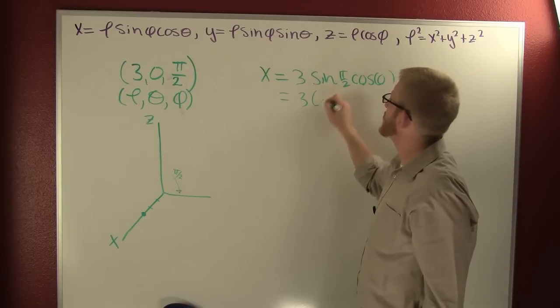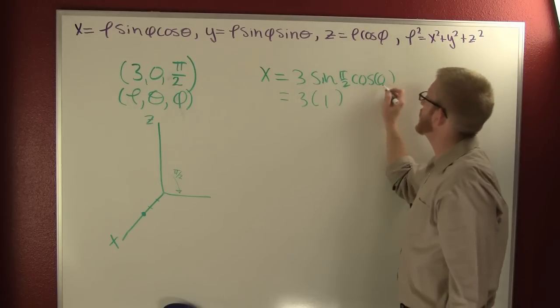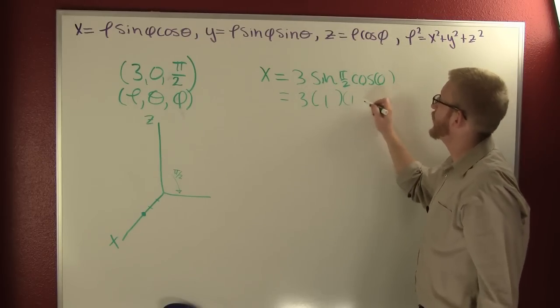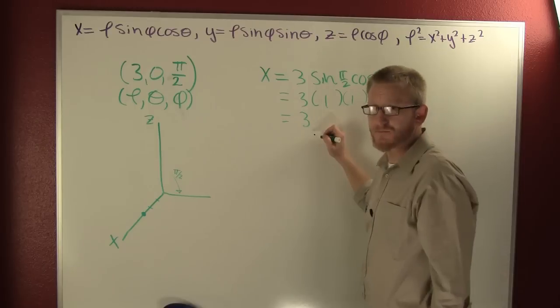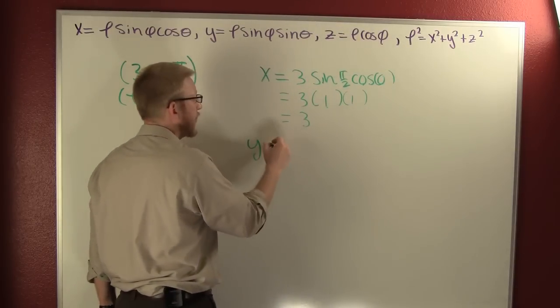This is 3 times the sine of pi over 2, that's a 1, the cosine of 0 is 1, and my x is going to be 3. Let's go and find our y.